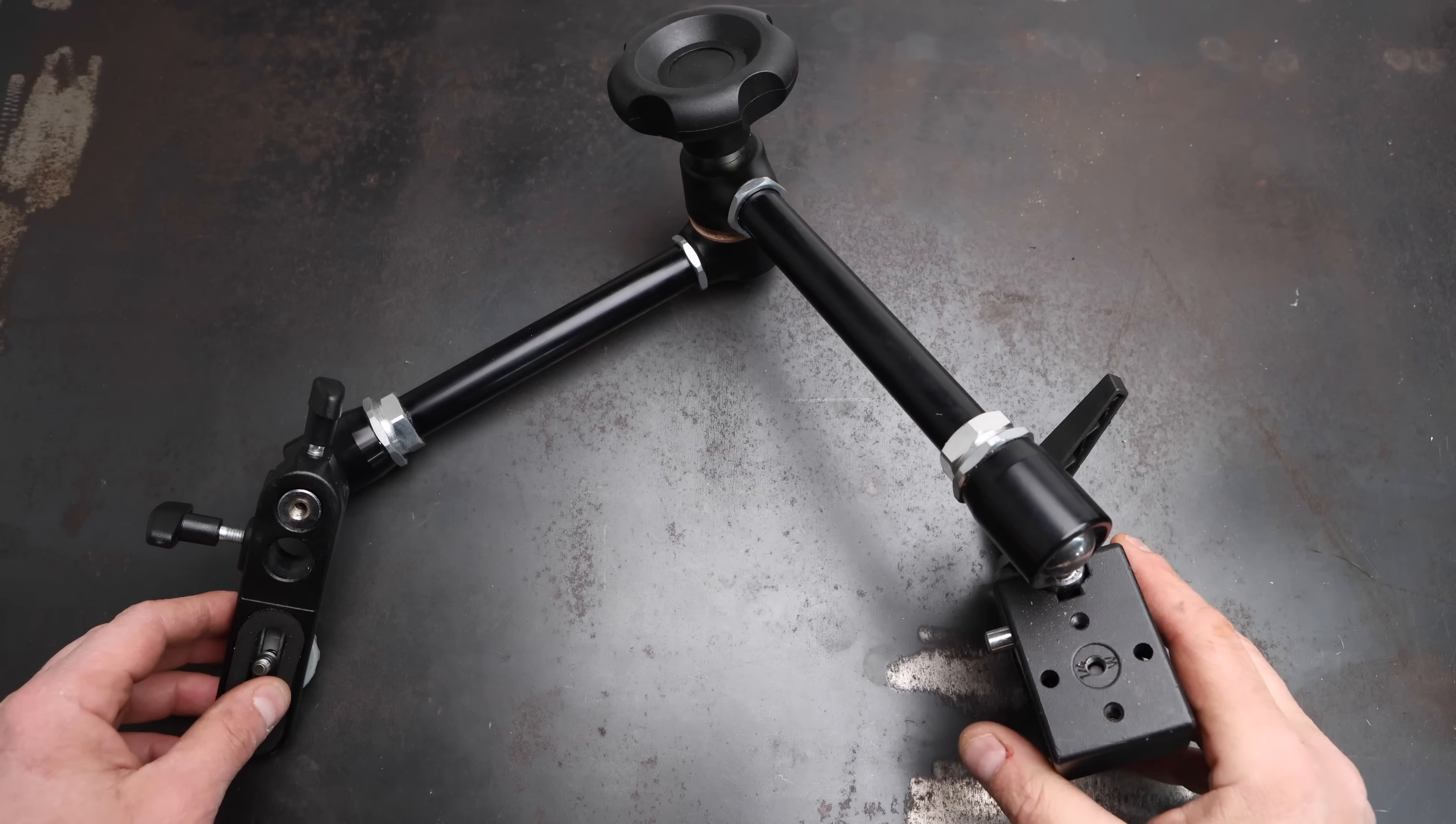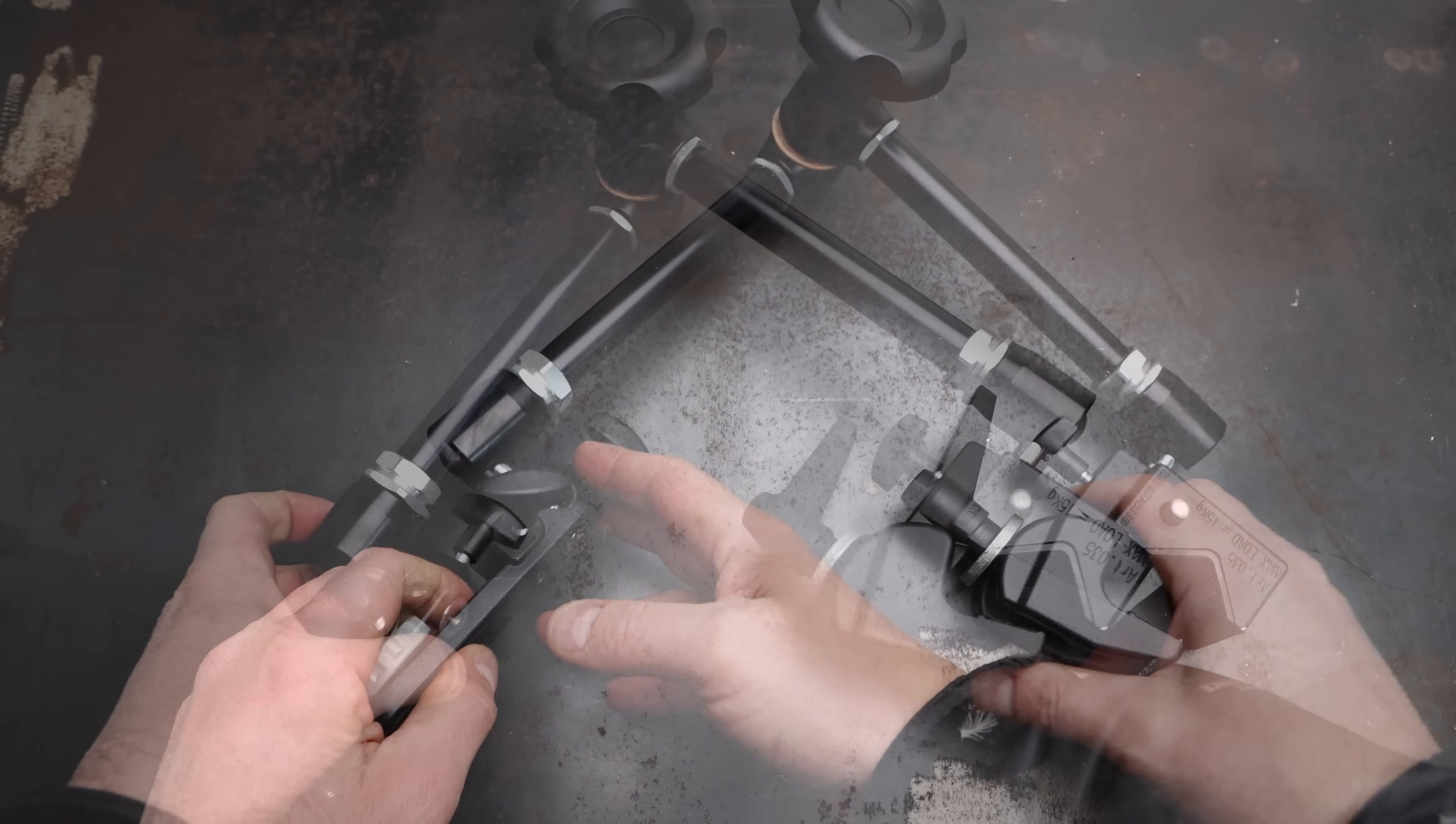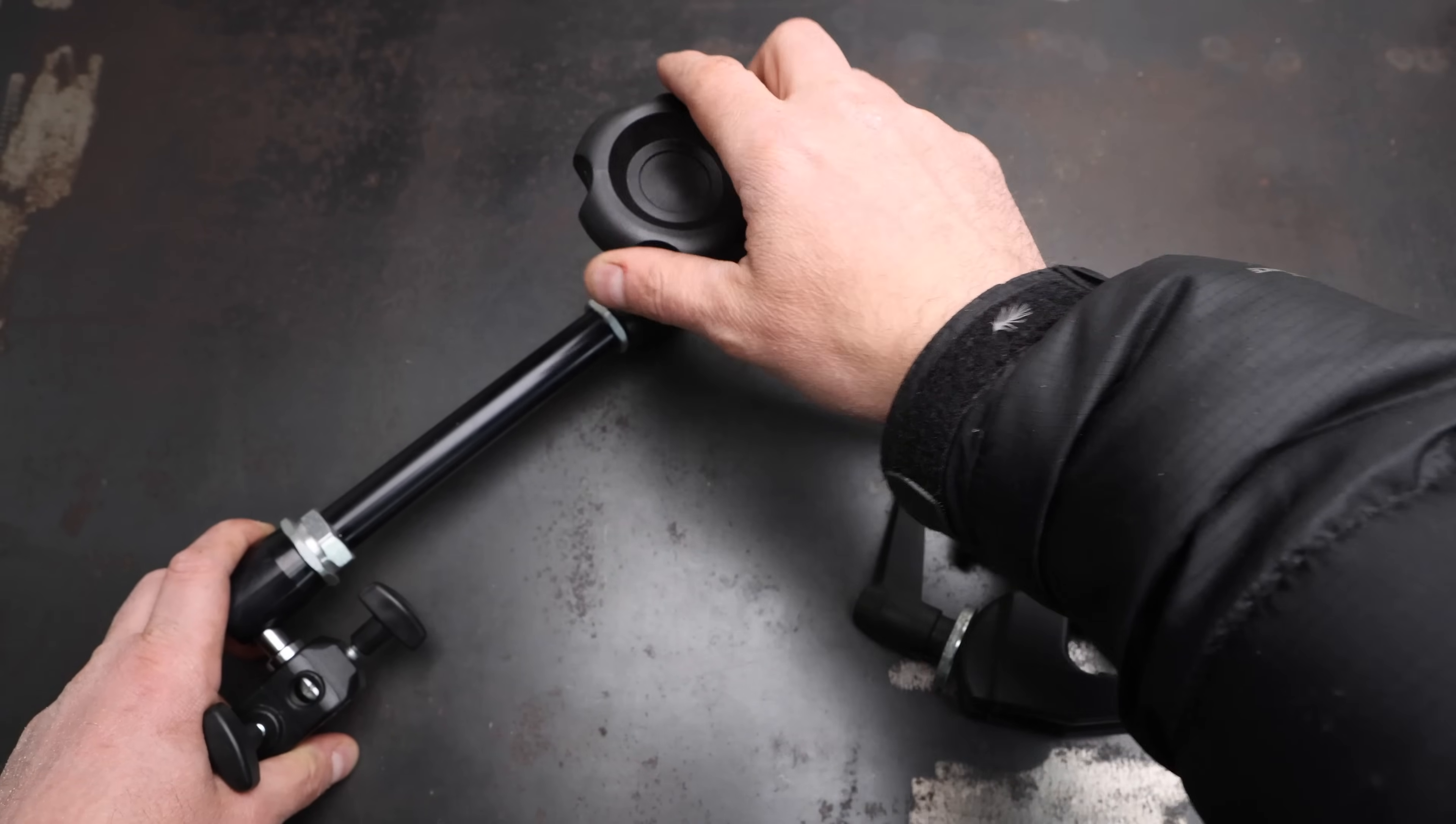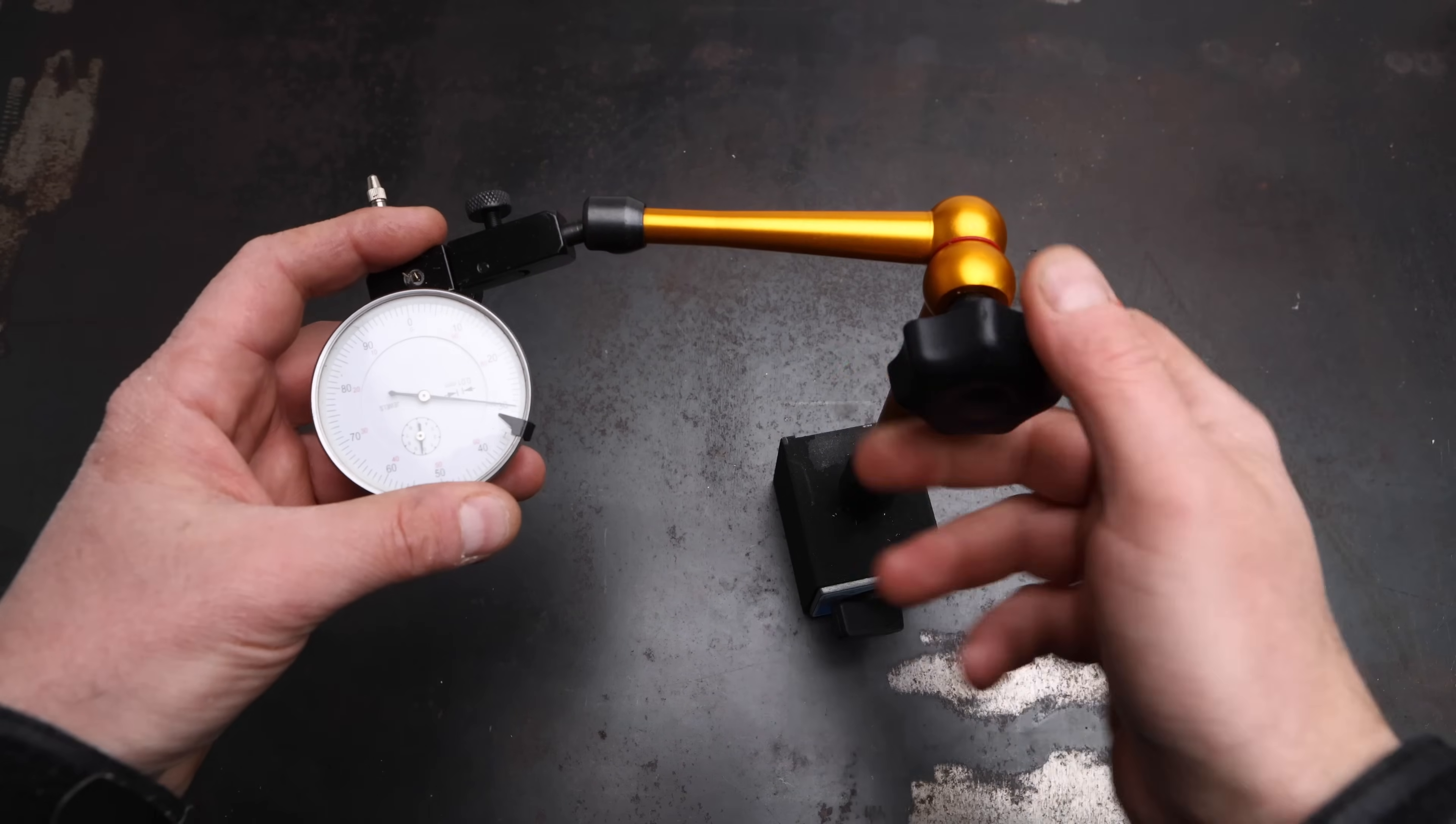When filming around the workshop I use this arm to mount the camera. It's got a sturdy clamp on one end, a camera mount on the other and you can move the camera around in several degrees of freedom. And once you've found the position you like you use this knob in the middle to lock the arm together. I'm sure you've all seen these Noga style indicator arms which work on exactly the same principle.